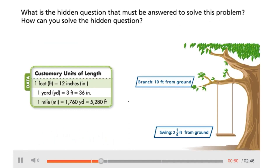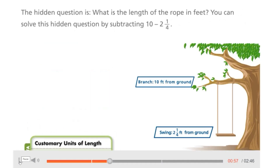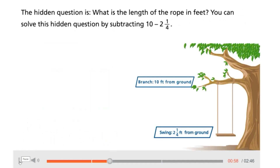What is the hidden question that must be answered to solve this problem? How can you solve the hidden question? The hidden question is: what is the length of the rope in feet? You can solve this hidden question by subtracting ten minus two and one-fourth.